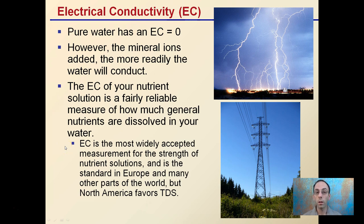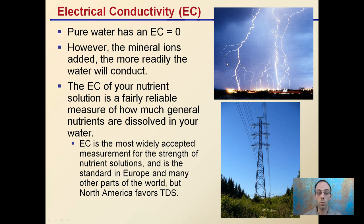Starting with electrical conductivity — EC — pure water such as reverse osmosis has an EC of zero. However, the more mineral ions added, the more readily the water will conduct, essentially sending a pulse of electricity through to see how quickly it passes through the solution. The EC of your nutrient solution is a fairly reliable measure of how much general nutrients are dissolved in your water. EC is the most widely accepted measurement for nutrient solution strength and is the standard in Europe and many other parts of the world.